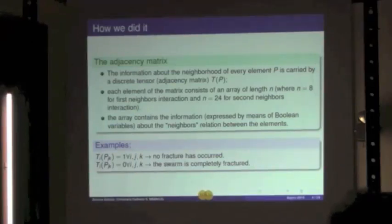Where N is the number of the possible interactions that a particle can have with its neighbors. So in the case of the first neighbors interaction N equals 8, while for the second neighbors we have 24, and this can be generalized to any size.